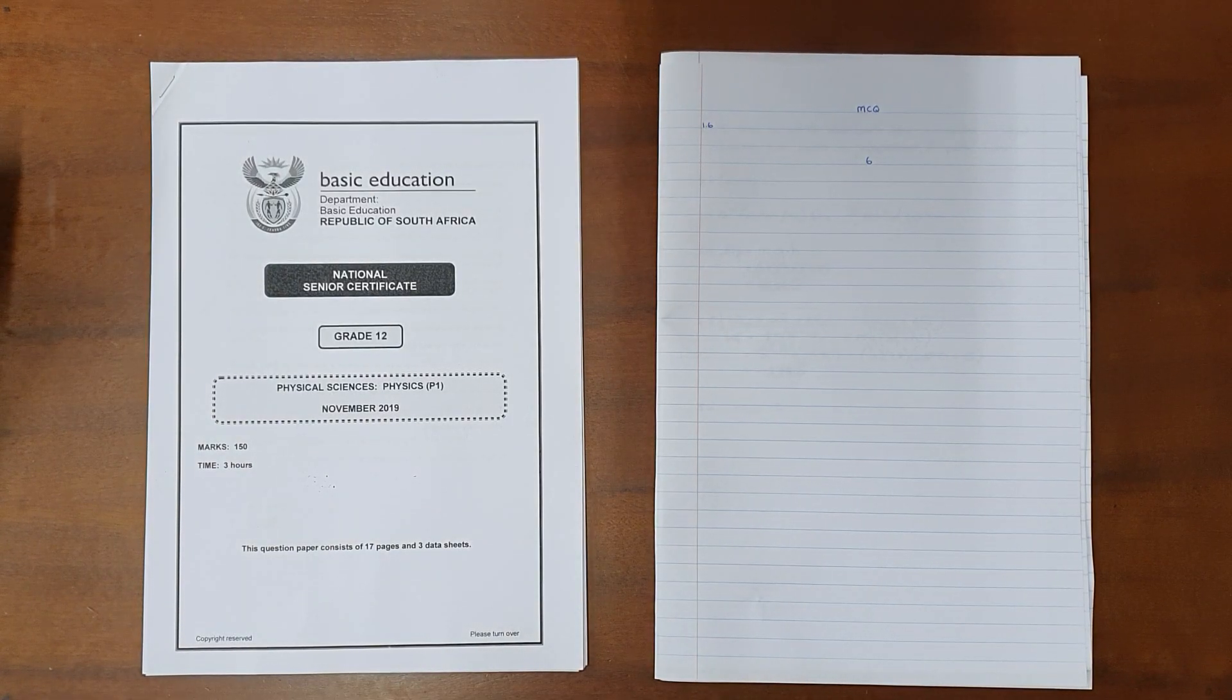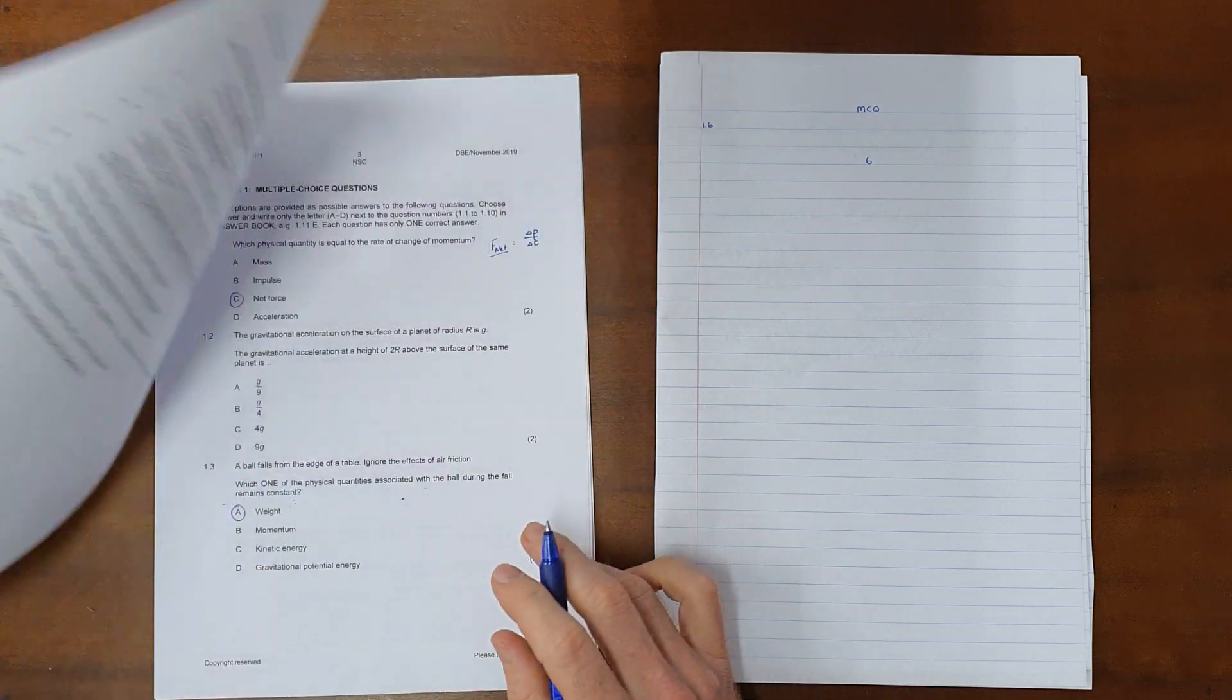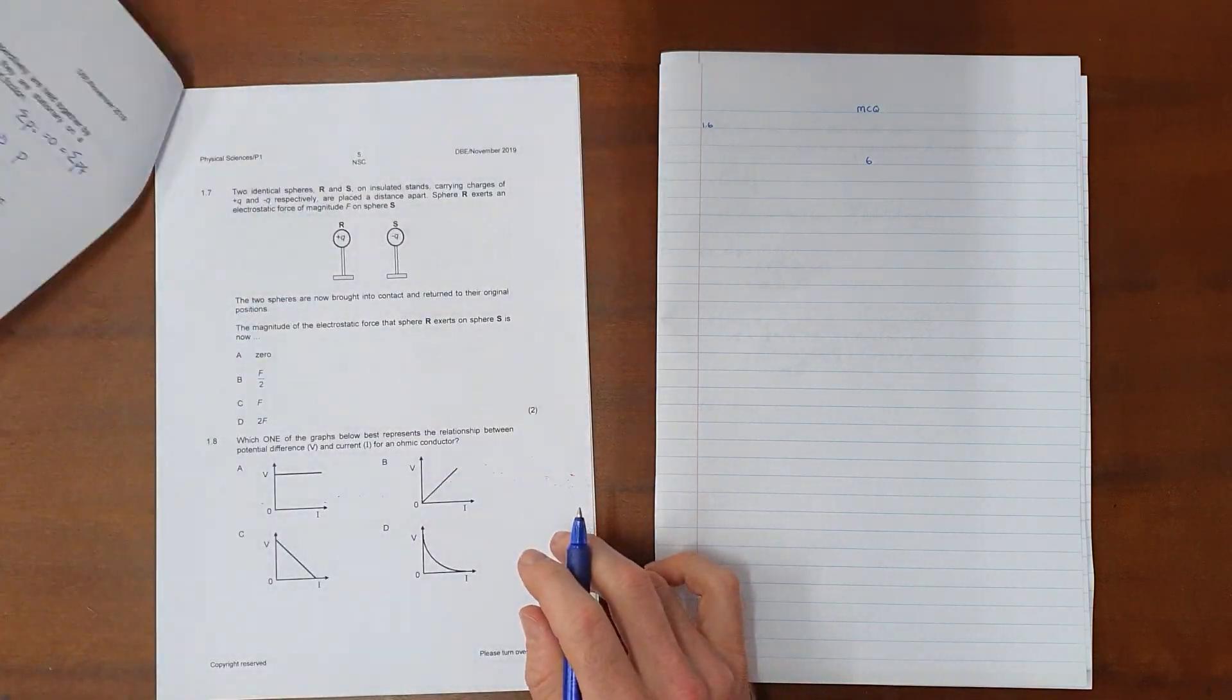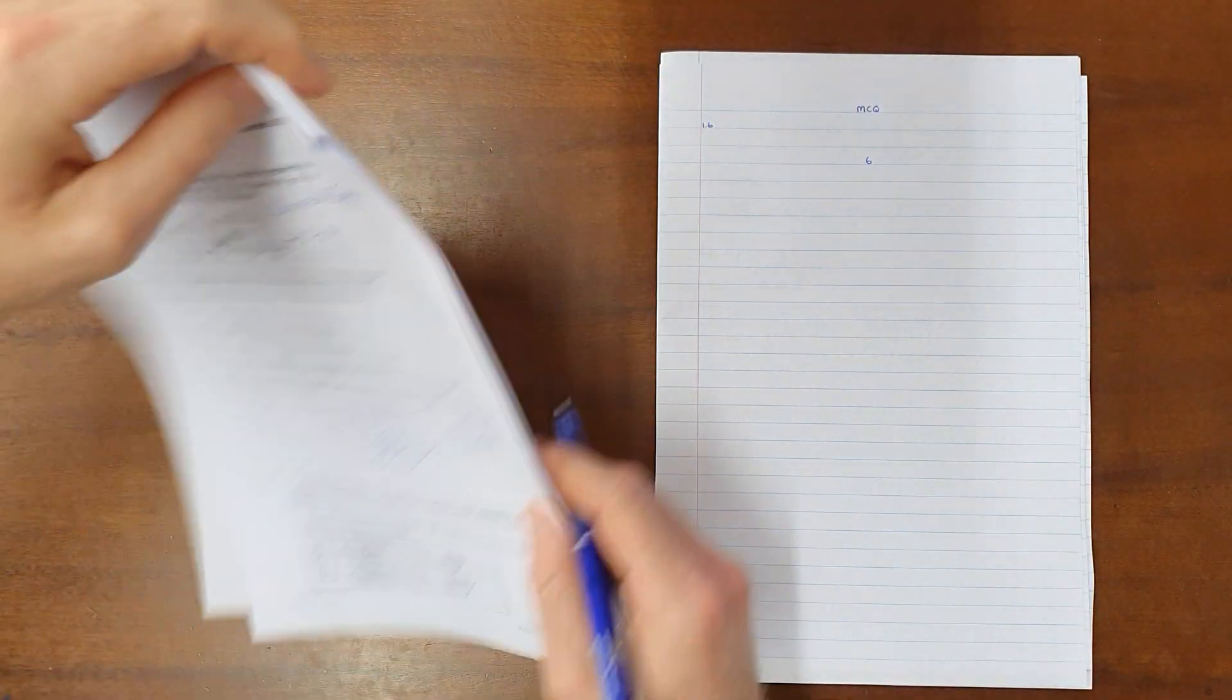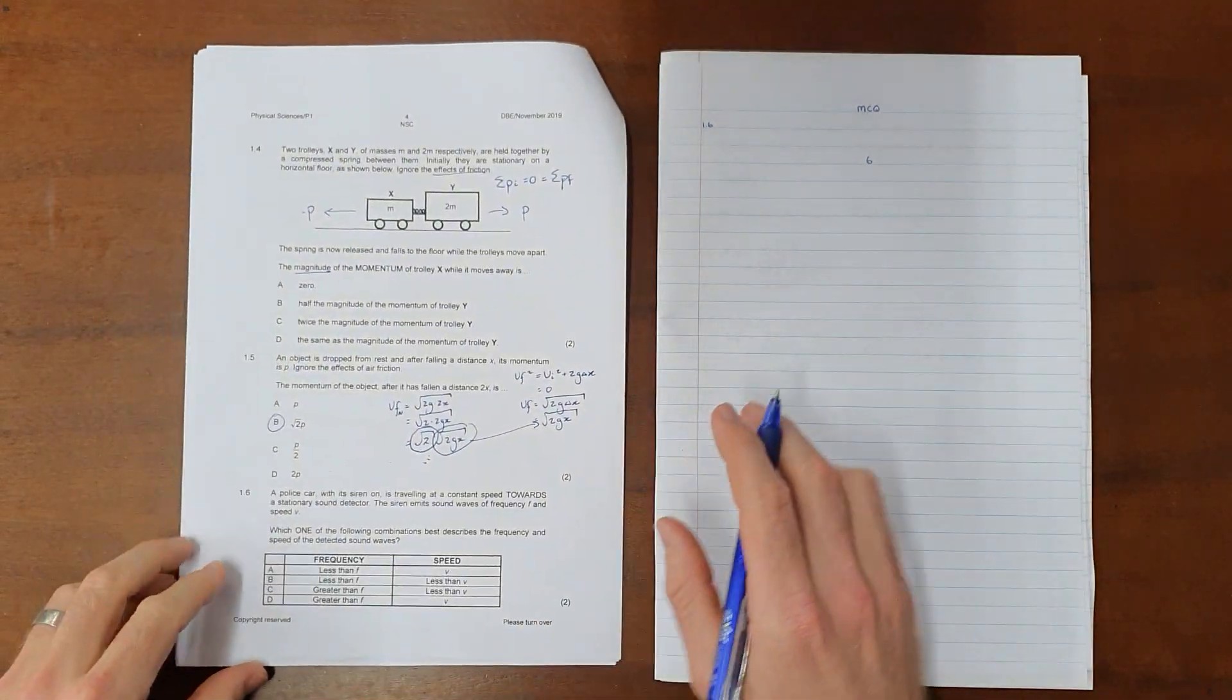I'm working through the Doppler effect question in the 2019 physics paper. The Doppler effect section has a multiple choice question which is question 1.6 which reads as follows.